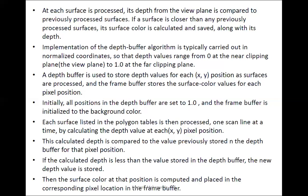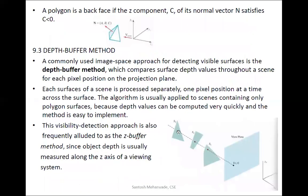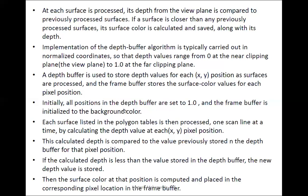The frame buffer is a master buffer containing all buffer types: color buffer, RGB buffer, depth buffer, auxiliary buffer, and more. Initially, all positions in the depth buffer are set to 1, assuming all objects are far. The frame buffer is initialized to background color. As we process each surface and find a smaller depth value, that shorter value is remembered as the new depth value. Each surface in the polygon tables is processed one scan line at a time by calculating the depth value at each x, y pixel position.